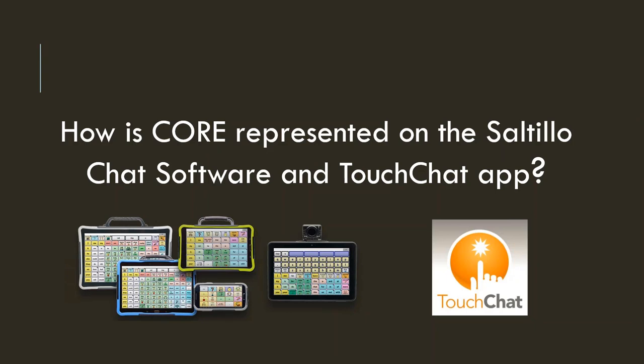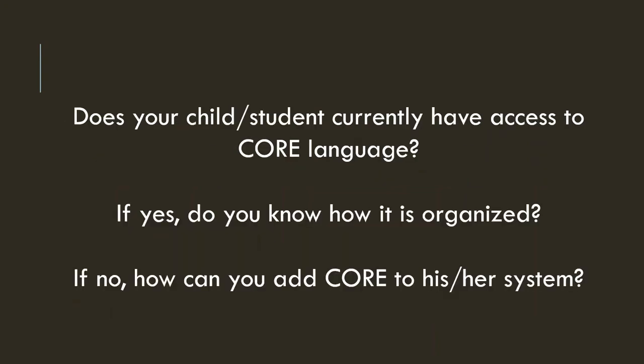It is important to understand how core is represented on the AAC system you are using. Just so you are aware, we offer WordPower files created by Nancy Inman that range from 20 buttons to 140 buttons. On Saltillo products, you can see core language in our NovaChat devices, our ChatFusion device, and our TouchChat app. Think about whether your child or student currently has access to core language. It's important that you know what that person has access to with regards to core, and if needed, it's important to supplement with low tech. If you are aware that core language is present, think about how it's organized, and if they do not have access, think about how you can add core to their system.